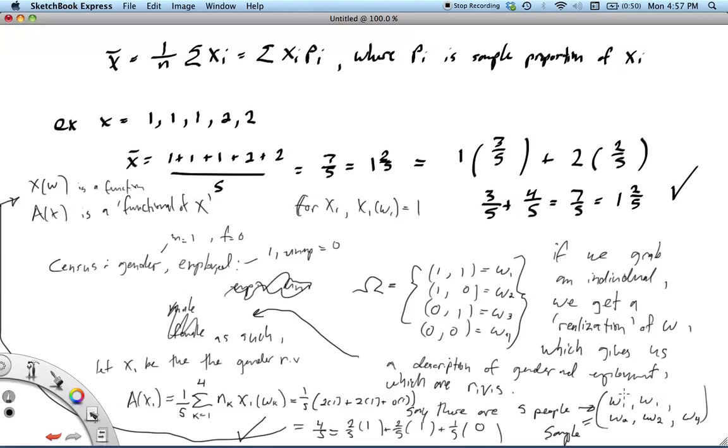And then the average operator is what's called a functional of that random variable. So I made up a pretend sample here. Let's say this is our entire population. This is everyone in the population. Everyone fills out the census, and there's five people. This is a very small country indeed. There's only five people. And we get two ω_1s, two ω_2s, and an ω_4, just for example.